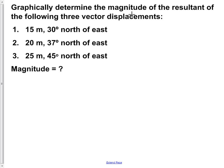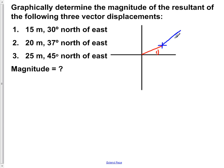The first thing we're going to do is draw graphically what we have for this problem. We are told we have our first vector, which is 15 meters, 30 degrees north of east. Then vector two, which we're going to show in blue, is 20 meters, 37 degrees north of east. Then for vector three, we're told that it is 45 degrees, 25 meters north of east.